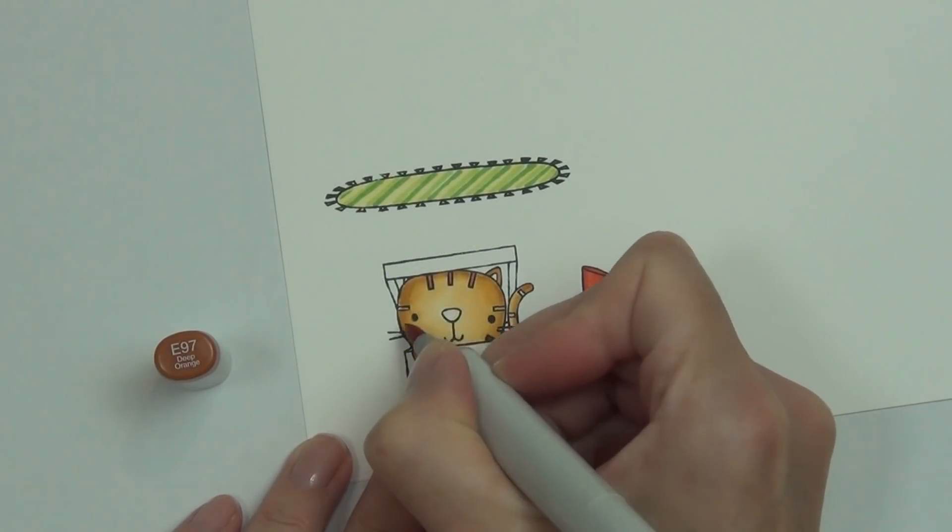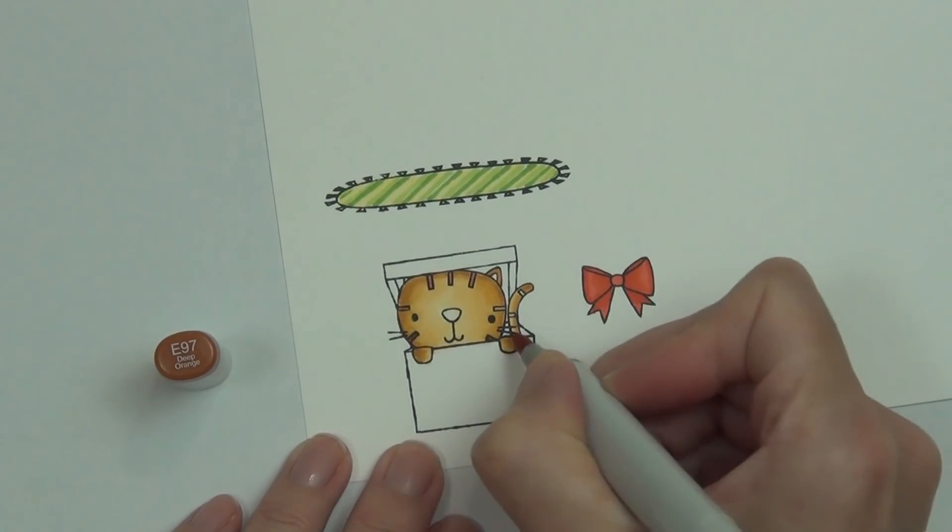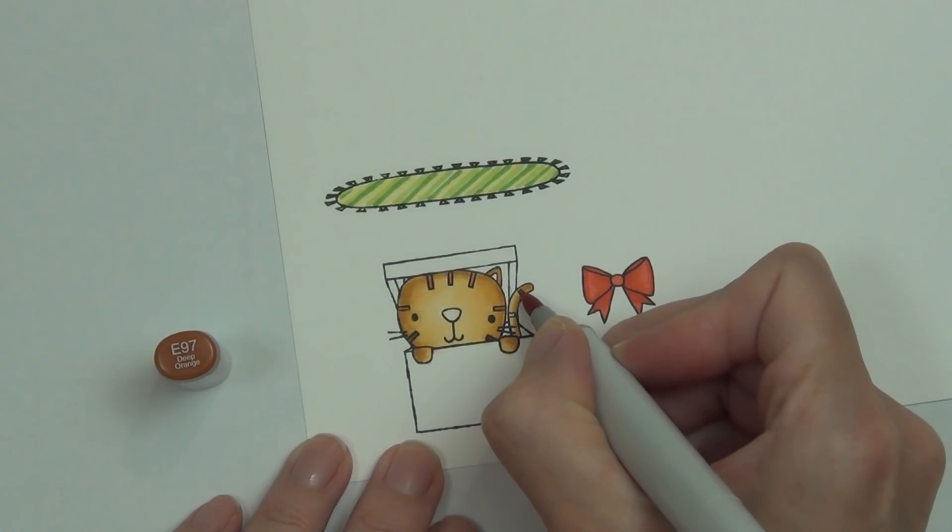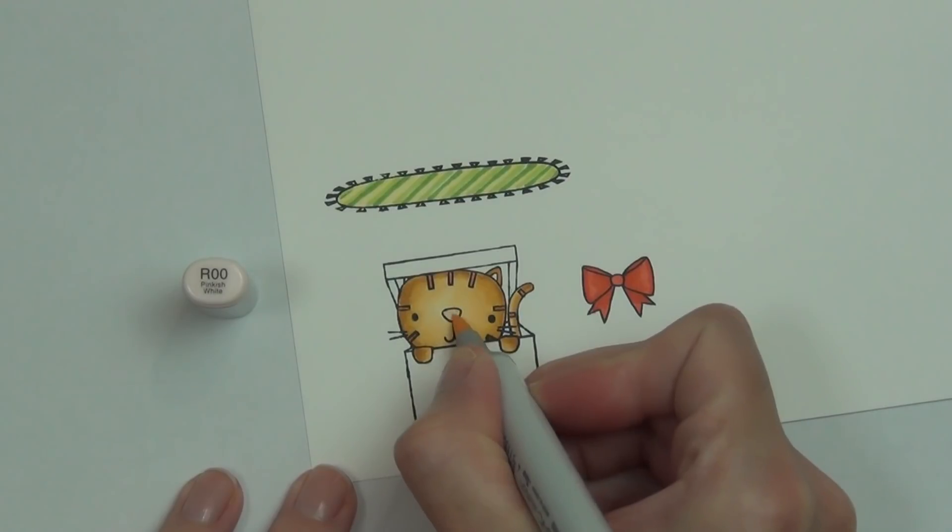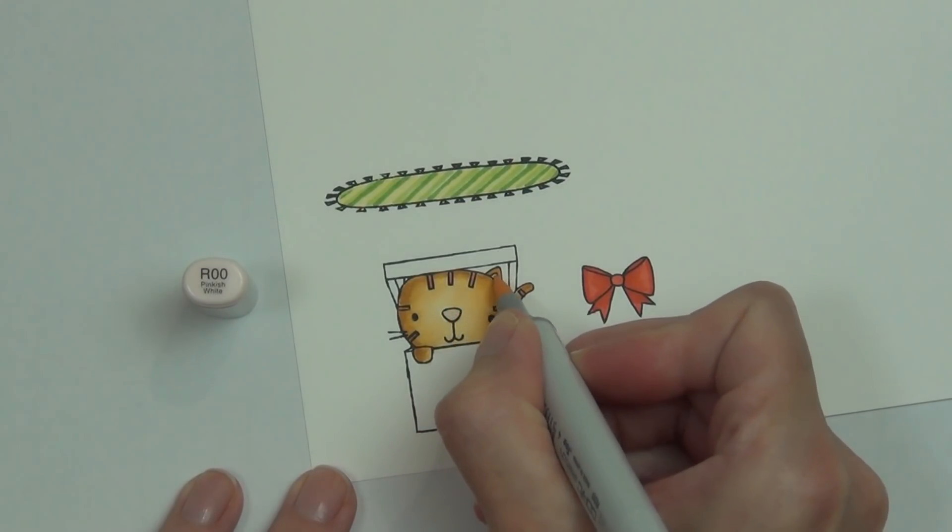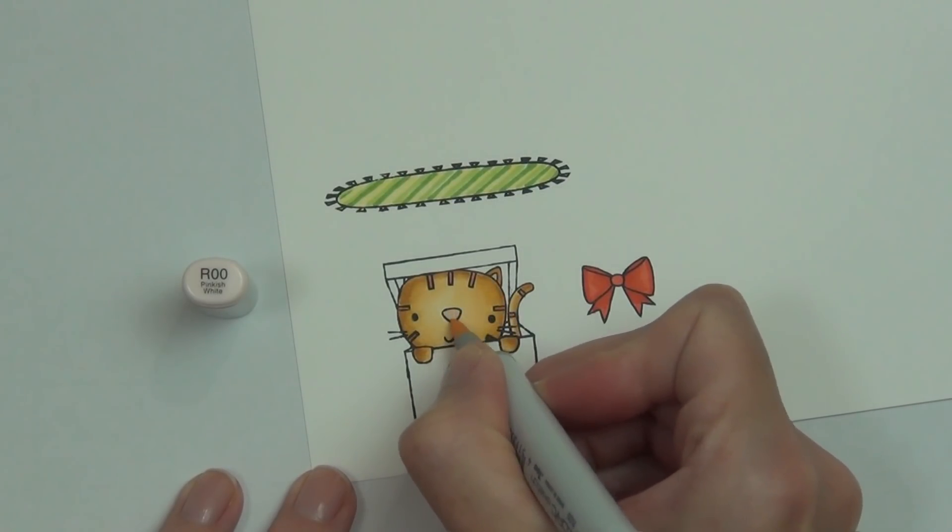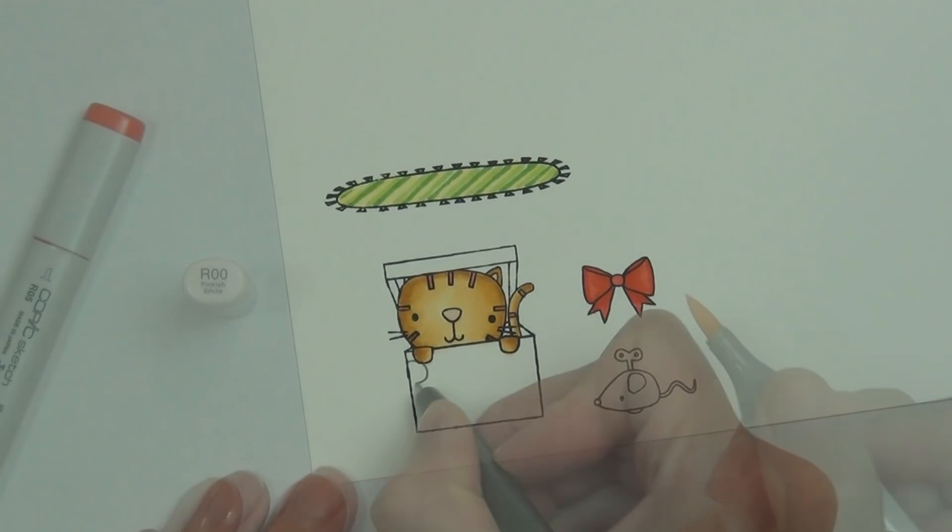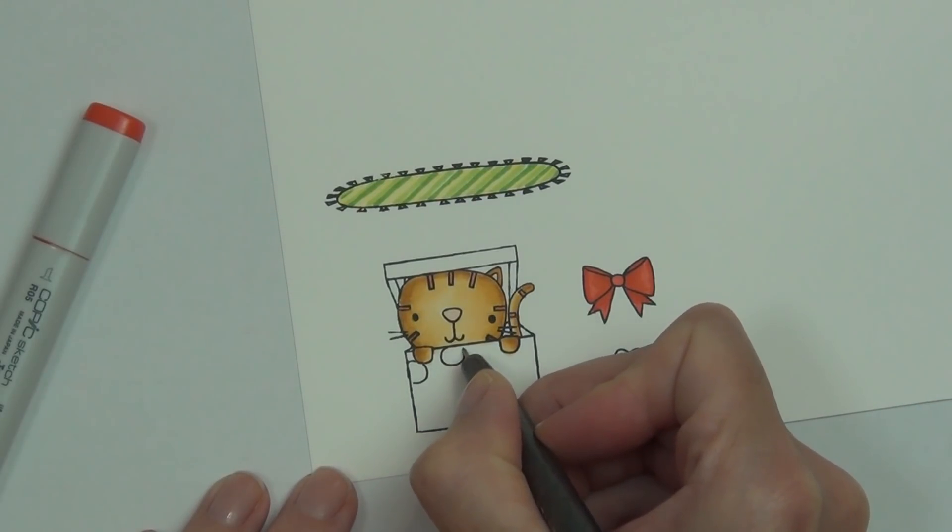I do like that the cardstock is matchy-matchy. I wouldn't like to use the card base in the Neenah 110 pound and then use other cardstock to color on. It's up to me to get used to it, and I do love it. It's a beautiful white cardstock, and I like that it's 80 pound and 110 pound because that gives me more options. The second way I'm going to add details is by using my Copic Multiliner.